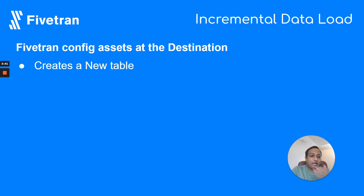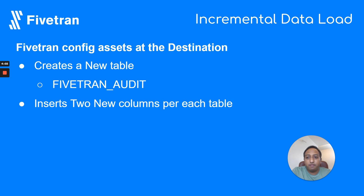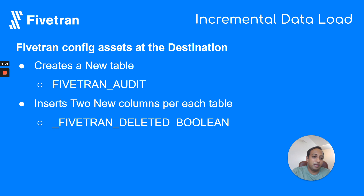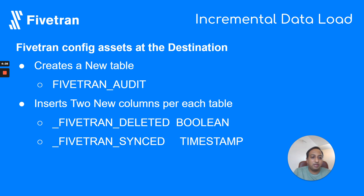When the sync happens, Fivetran has to maintain some assets on the data warehouse. In Fivetran's case, it creates a new table called the Fivetran audit table, which gets created in your destination repository. Additionally, two new columns are added for each table: the first is called Fivetran deleted, a Boolean value useful for soft deletes when a row is deleted; and the second is called Fivetran synced, a timestamp that keeps track of when each row was last synced.